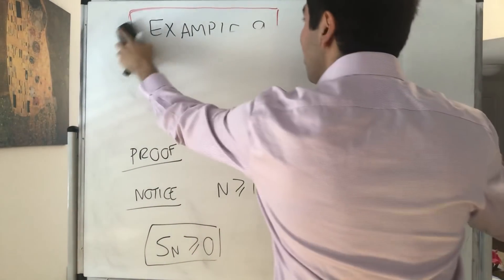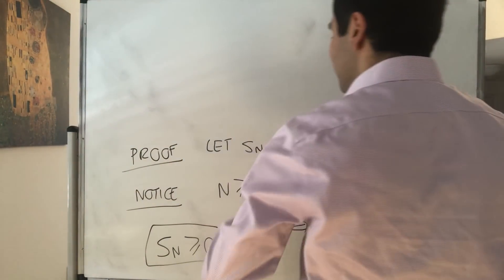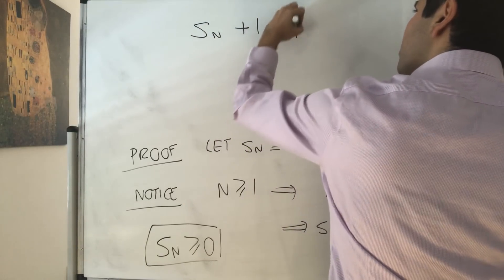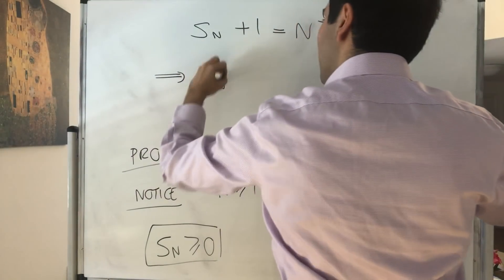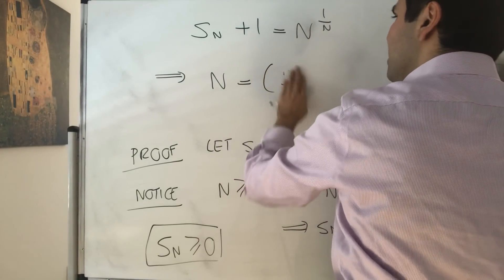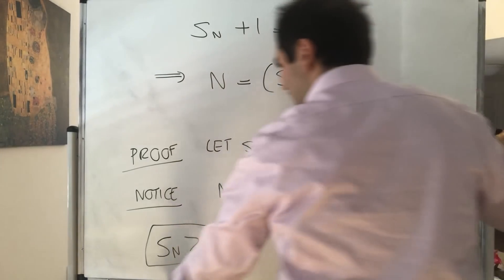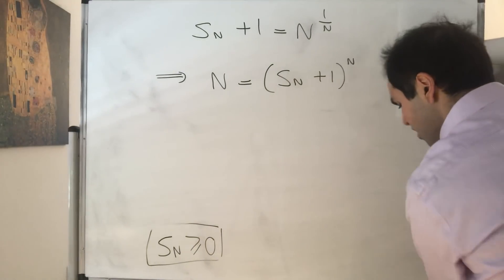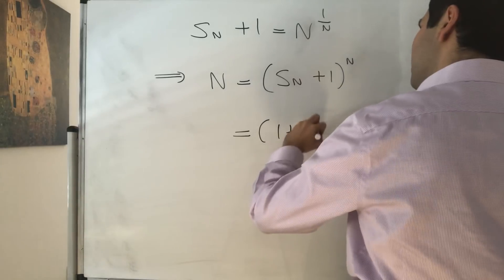But the cool thing is notice here we can actually solve for n. So what we have is S_n plus 1 equals n to the 1 over n. So in particular if you raise this to the nth power we get n equals S_n plus 1 to the n and we can also write this as 1 plus S_n to the n.